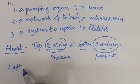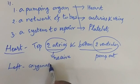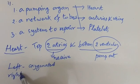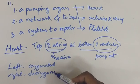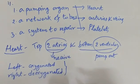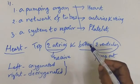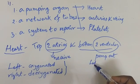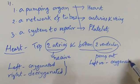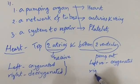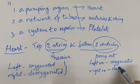The top two atria are left and right. The left atrium receives oxygenated blood and the right atrium receives deoxygenated blood. The left ventricle pumps out oxygenated blood, while the right ventricle pumps out deoxygenated blood.